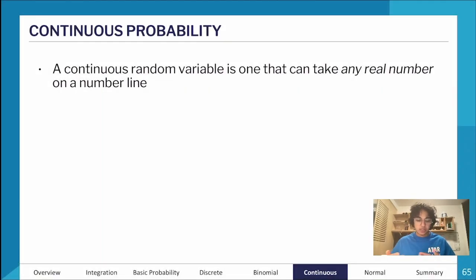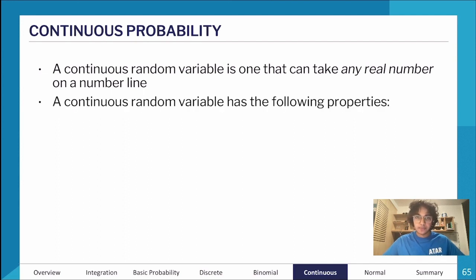A continuous random variable is one that can take any real number, not just integers or natural numbers. A continuous random variable has some properties: it needs to be greater than zero for all of x. I'm now using a function, which is a bit strange, but we'll see why a function makes more sense than what we saw earlier.